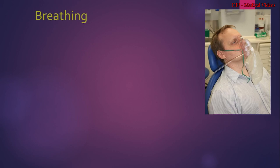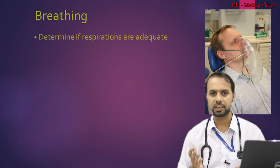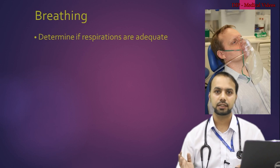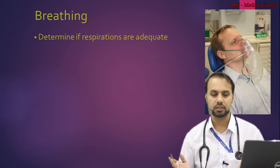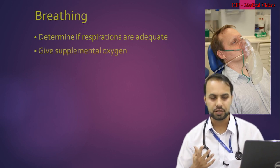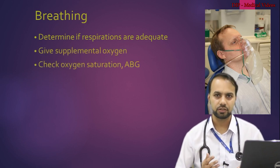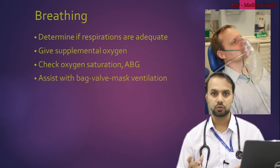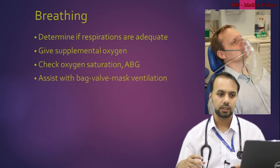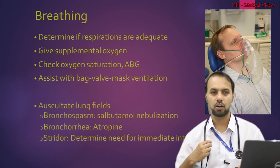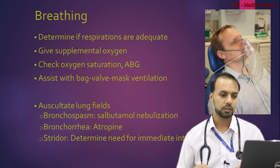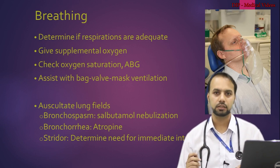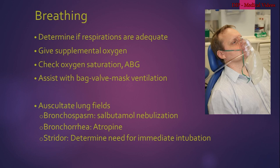For breathing, determine if respirations are adequate. Certain drugs or poisons can cause severe respiratory depression leading to apnea. Give supplemental oxygen, check oxygen saturation and arterial blood gas, and assist with bag-and-mask ventilation if required. Auscultate lung fields for bronchospasm — salbutamol nebulisation may help. If there is bronchorrhea, give atropine. If there is stridor, intubate the patient immediately.